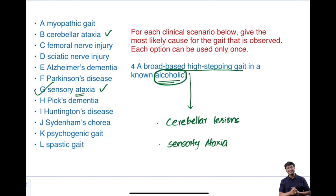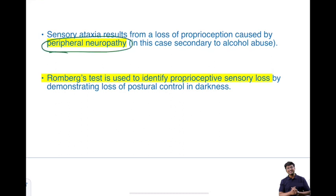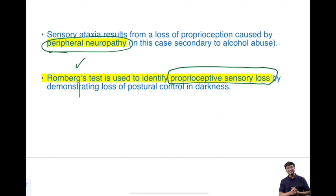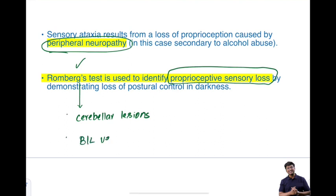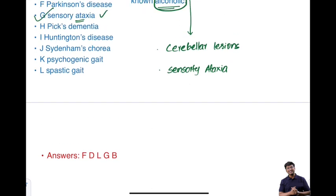In sensory ataxia, there is loss of proprioception due to peripheral nerve damage — peripheral neuropathy. Because of this proprioception loss, Romberg's test will be positive. However, Romberg's test is not pathognomonic of proprioception loss alone; it can also be positive in cerebellar lesions and bilateral vestibular damage. The answer in this scenario is sensory ataxia.